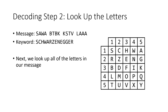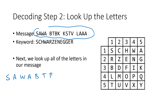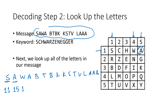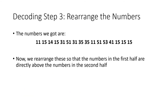Now we look up all the letters in our encoded message in the Polybius square. For the first several letters — S, A, W, A, B, T, B, K, K, S, T, V, L, A, A — we find the row and column for each. For example, S is row 1, column 1; A is row 1, column 5; W is row 1, column 4; B is row 3, column 1; and so on. We write all these numbers out in a big long list going left to right.